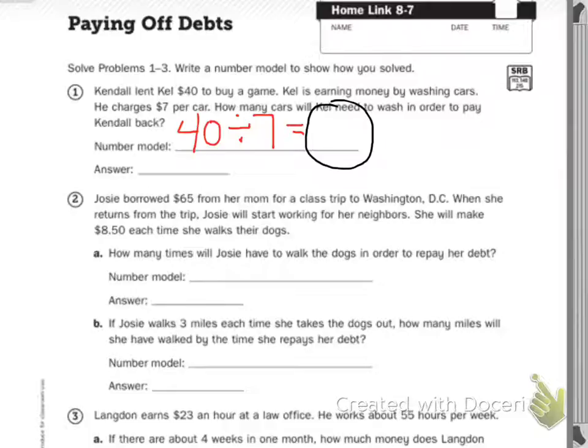Problem 2: Josie borrowed $65 from her mom for a class trip to Washington, D.C. So what did she start with? $65. When she returns from the trip, Josie will start working for her neighbors. She will make $8.50 each time she walks their dogs. How many times will Josie have to walk the dogs in order to repay her debt? So $65 divided by $8.50 equals your answer.